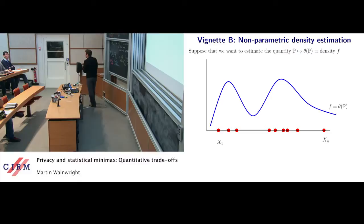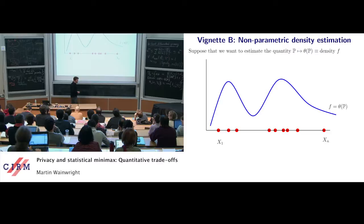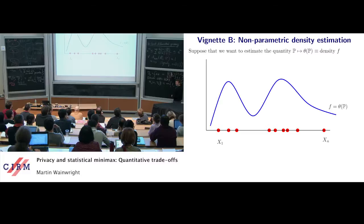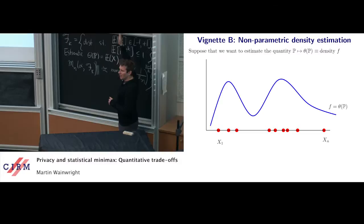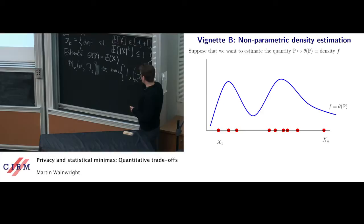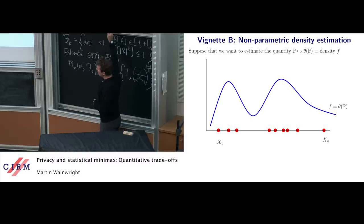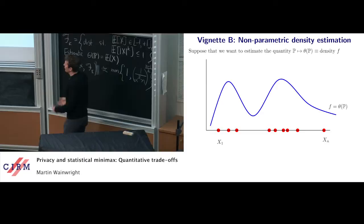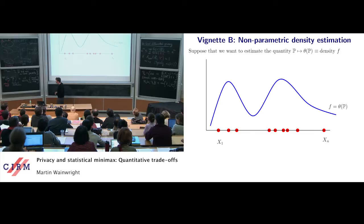Let's move on to a problem that's more meaty: nonparametric density estimation. We're going to see that privacy here has a pretty significant effect. I'm not personally wedded to this privacy model — some people are very religious about their privacy models. I think it's an interesting model and it has some defects. What I'm interested in doing is understanding: if you impose certain models of privacy, what effect does it have on statistics? In density estimation, we'll see it has quite an interesting effect.